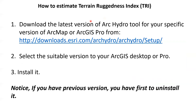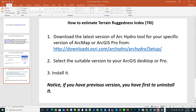In order to estimate the TRI using ArcGIS, we have to download the Arc Hydro tool — for ArcMap, ArcGIS Desktop, or ArcGIS Pro. Based on the version that we have, we can download the appropriate tools. We also have to make sure to uninstall any previous version before installing the new one.